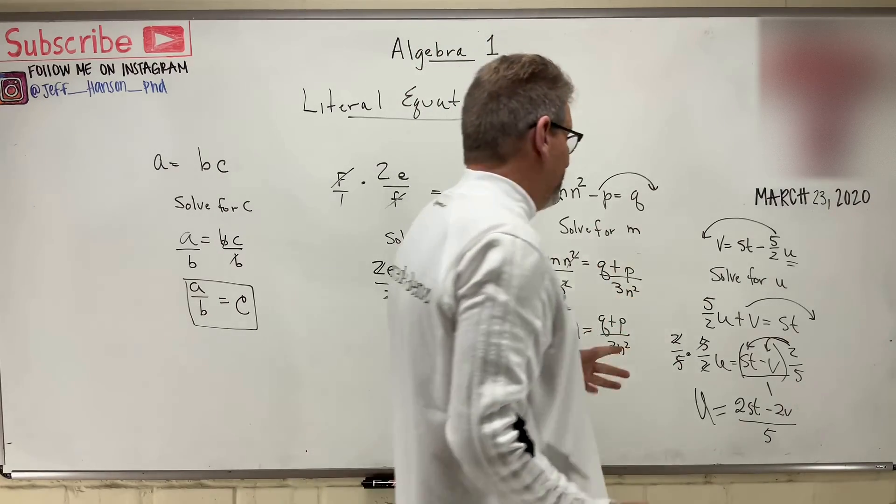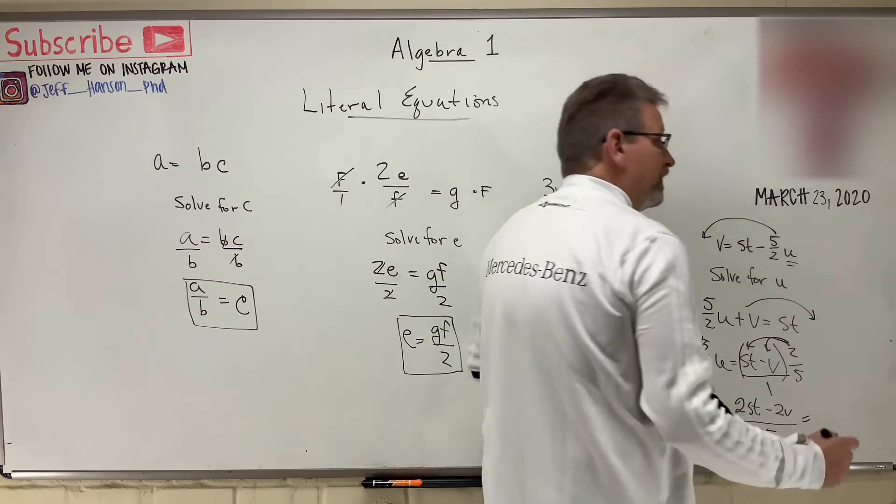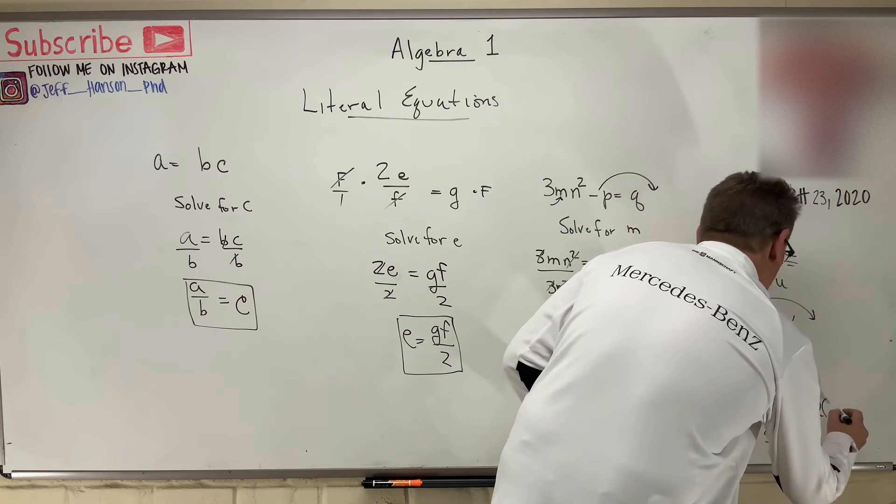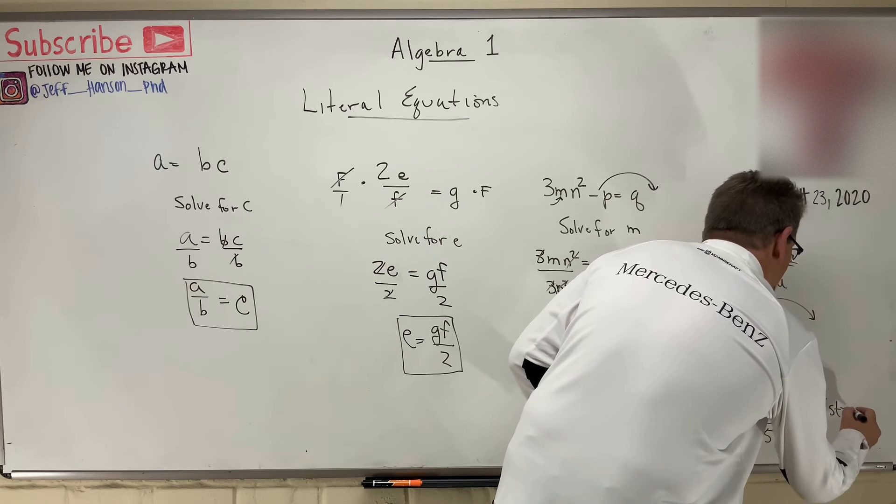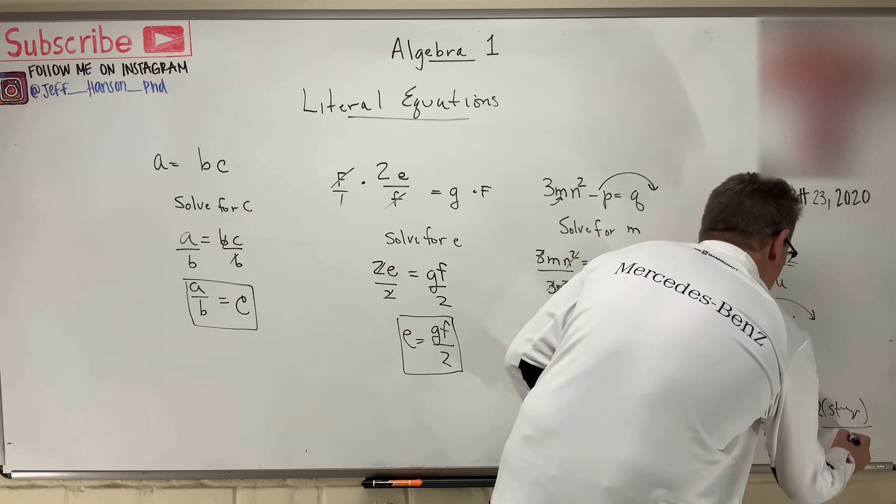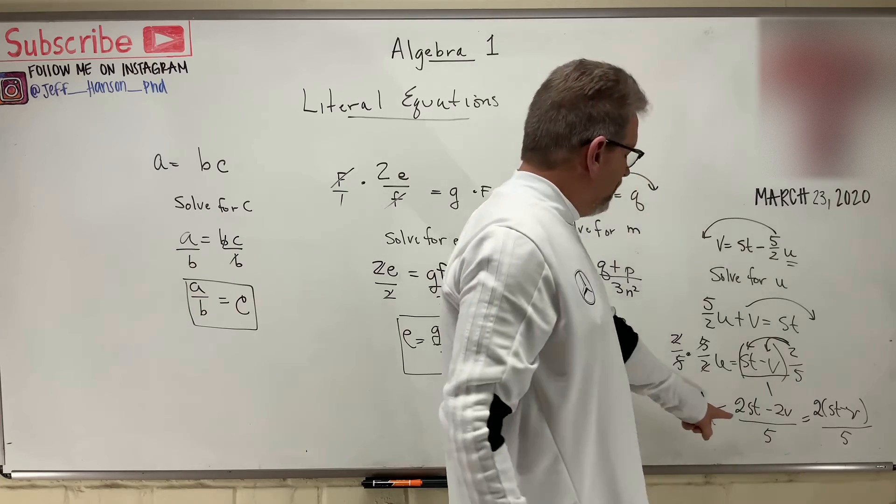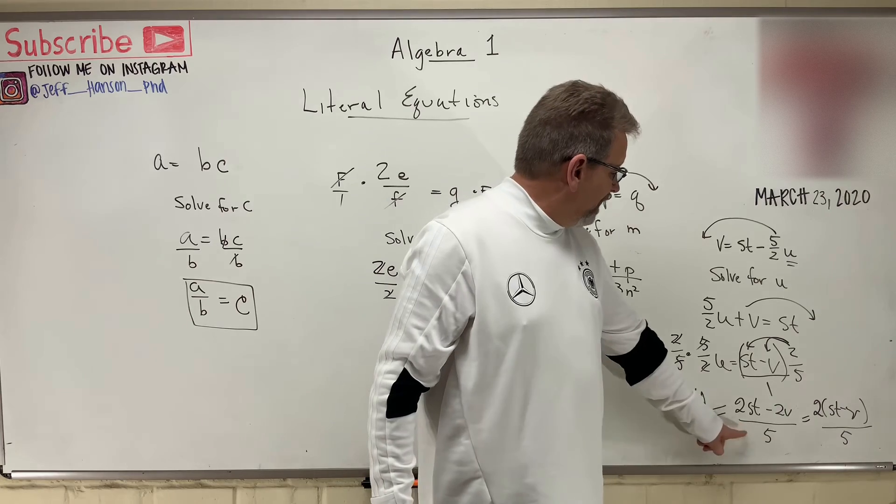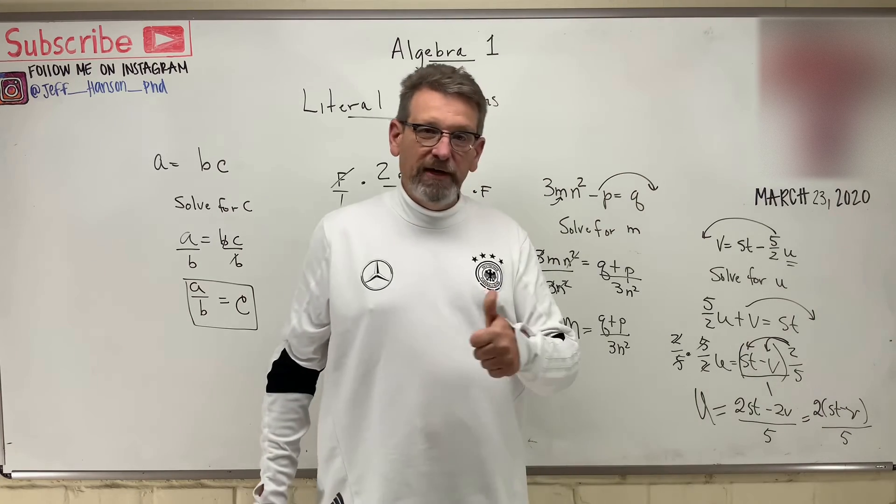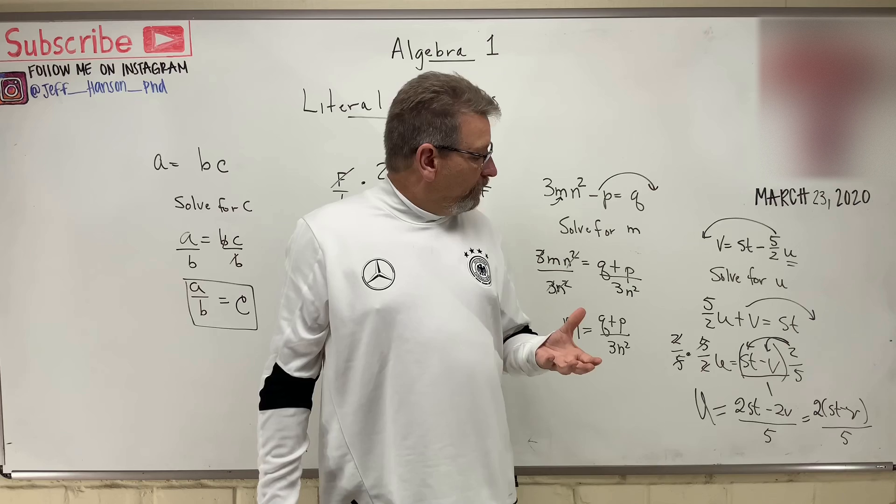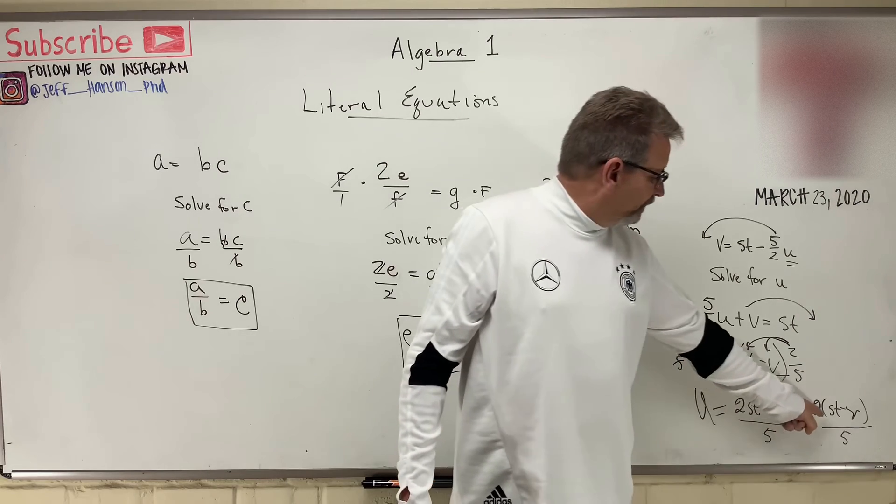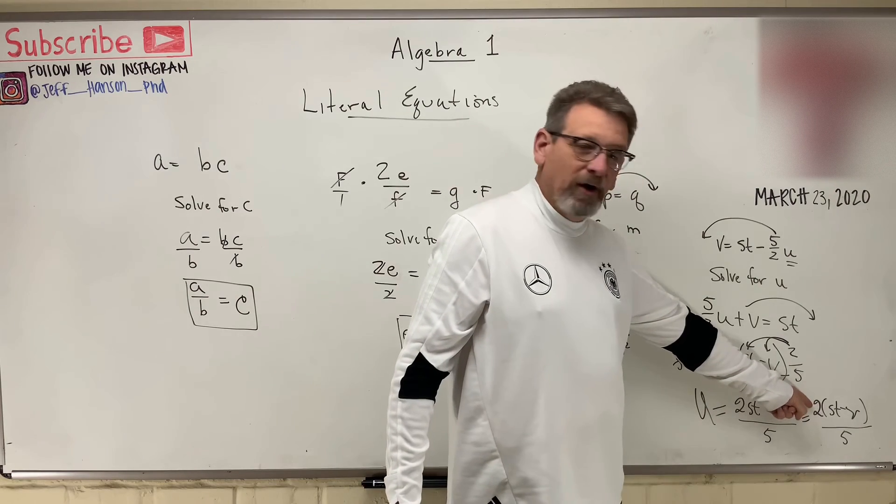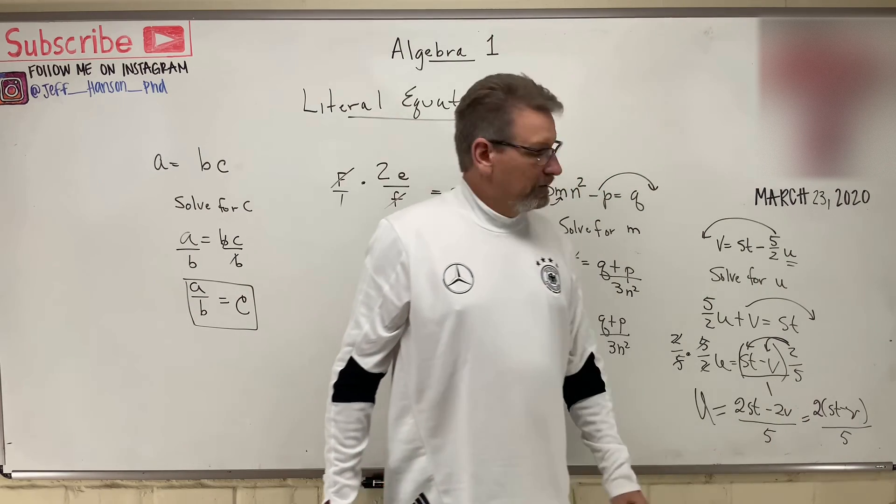Or, you could have left it like this either. This is what we call the factored form. Is when you did this. 2 times st minus v. Divided by 5. Okay? Either one of those would work. They're both exactly the same. So, whether you wrote it in that form or that form, you got it correct. If they ask you to write it in the factored form, then that's factored. Factoring means I've taken a 2 out of that guy and a 2 out of that guy and brought him out front. Okay? That's factored. Okay?